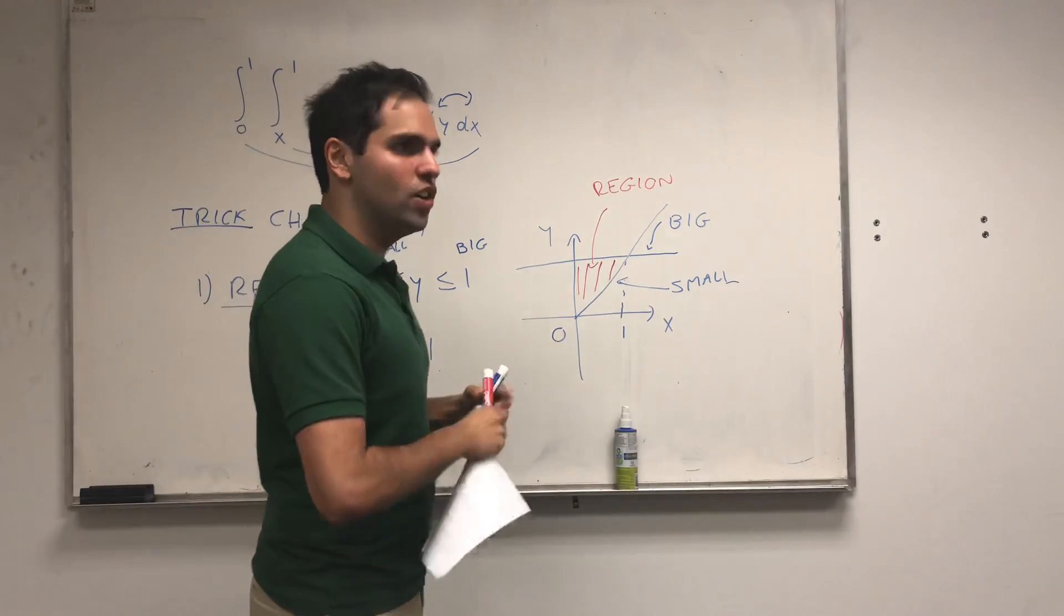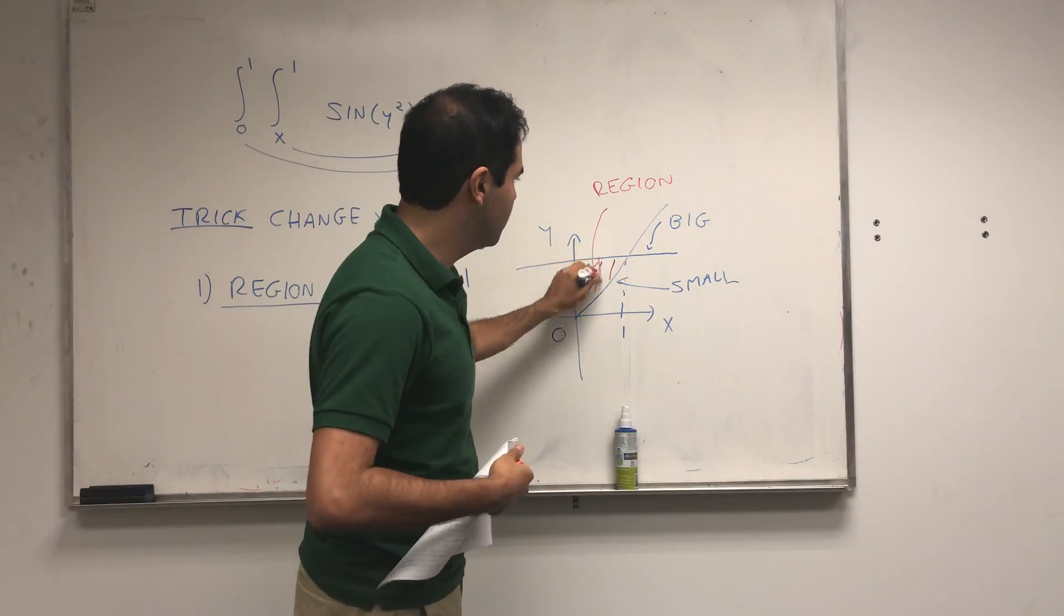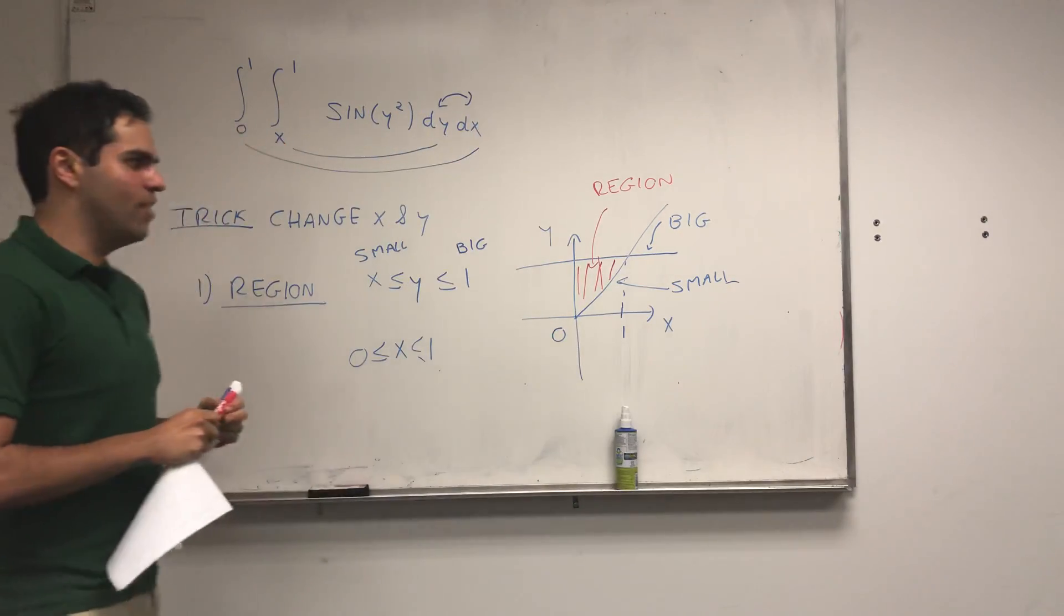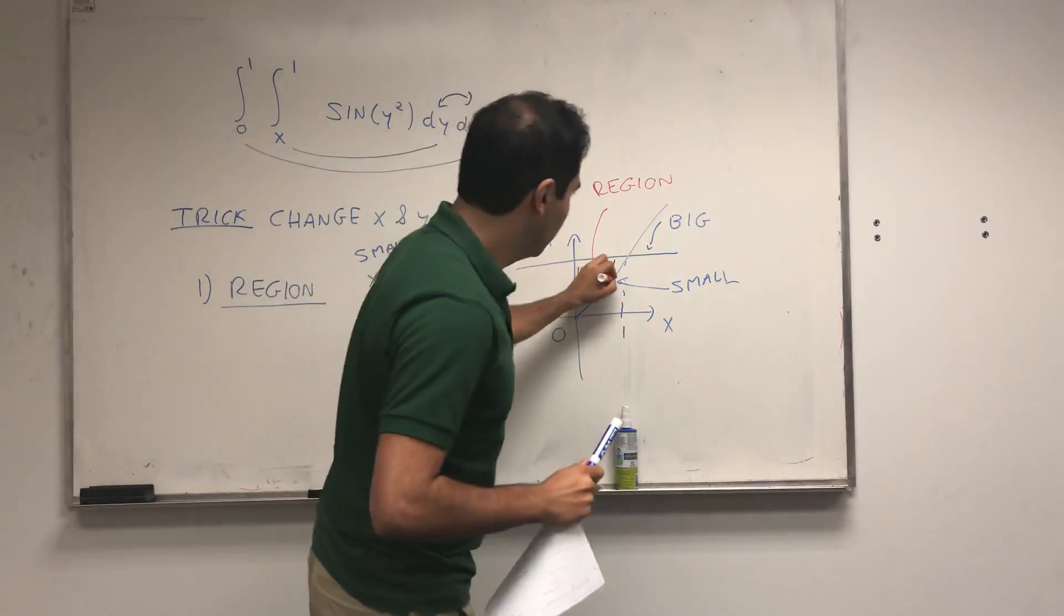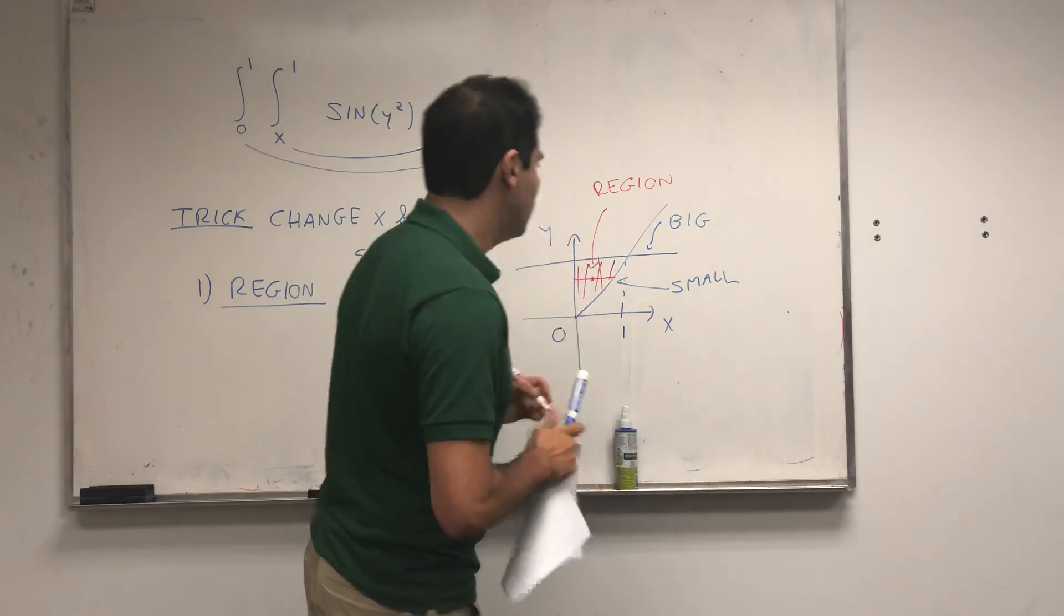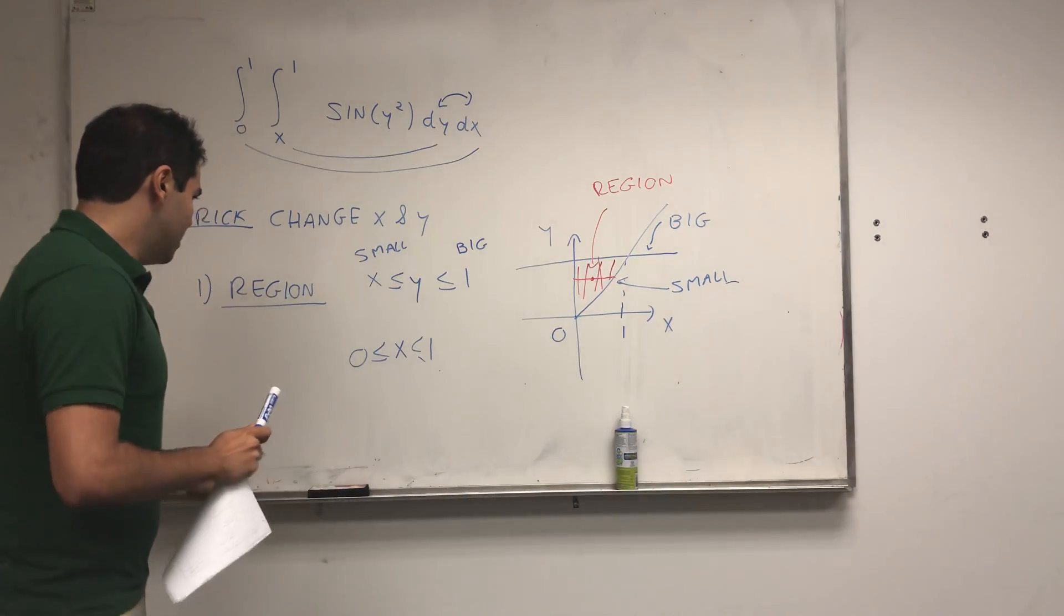So, instead of having this as a vertical region like this, where y is with respect to x, we want to write x with respect to y. So, we want to change this into a horizontal region.